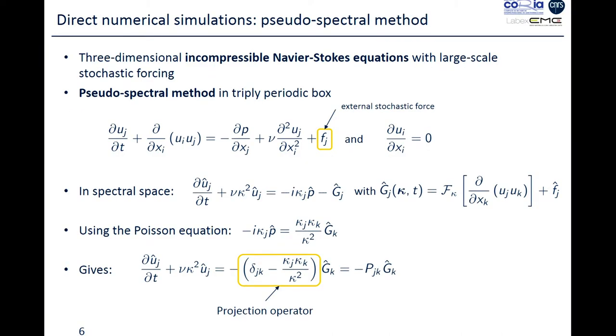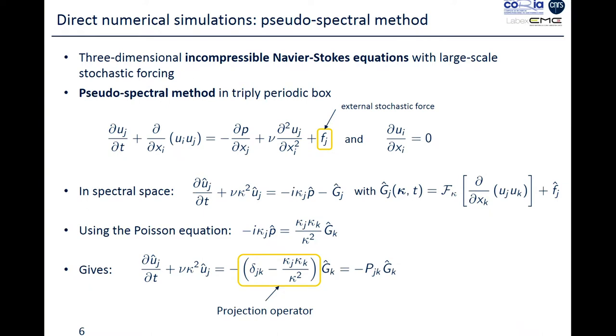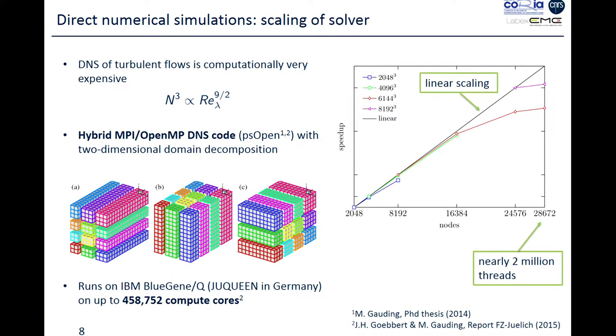I will skip all details about the code. The code is incompressible. It solves incompressible Navier-Stokes equations by a pseudo-spectral method. The scalar is transported by this transport equation, in which we consider that the Schmidt number is equal to unity, and we have an imposed mean gradient in one direction, let's say y. So gamma is the mean value of the scalar gradient.